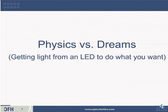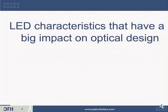One of the first issues you need to consider is the reality of physics versus your dreams for a product. How can you physically achieve getting the light from an LED to the spot that you want? And is it realistic given the laws of physics? There are a number of characteristics about an LED which have a big impact when you're thinking about how to design optics for it.